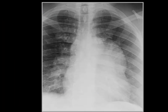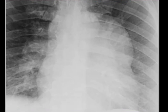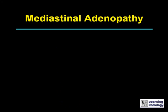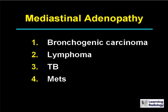Here's the next differential. The differential is mediastinal adenopathy. There are five causes. The five causes of mediastinal adenopathy can include bronchogenic carcinoma, lymphoma, tuberculosis, metastases, and sarcoid.